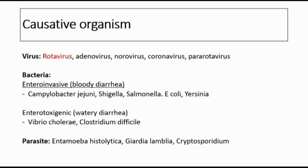There are a lot of causative organisms that can cause acute gastroenteritis, and rotavirus is the most common causative organism. The organisms that can cause acute gastroenteritis, known as AGE, are viruses, bacteria, and also parasites.